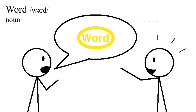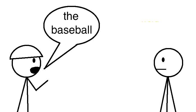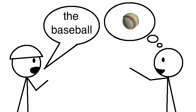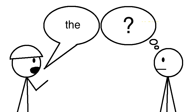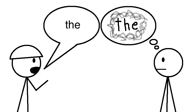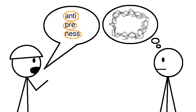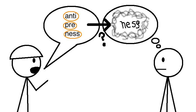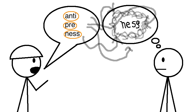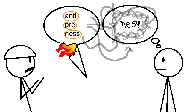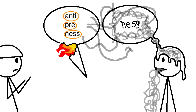But this definition gets a bit problematic when you look at grammar words. Like I can say 'the baseball' and you'll think of a baseball, but if I just say 'the,' what is the thing that you think of? Maybe you think of some abstract concept of 'the-ness'? But in that case, there are a lot of non-word morphemes that I can say where you'll have a similar reaction. I can say anti, or pre, or -ness, and there's a good chance I'll communicate some vague idea of oppositeness, or beforeness, or nessness. This gets into the issue of what it even means for something to mean anything, which is a weird philosophical topic that is difficult to discuss and even harder to think about.